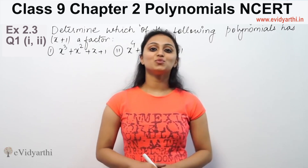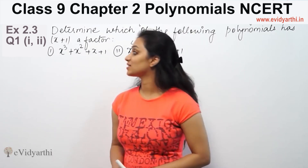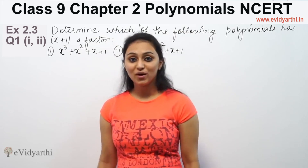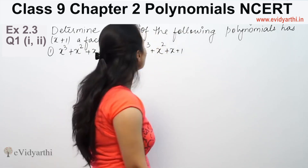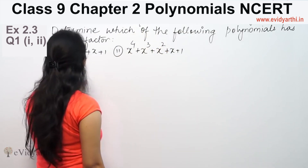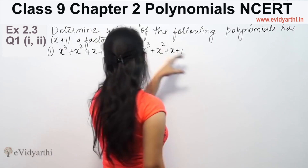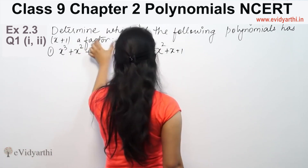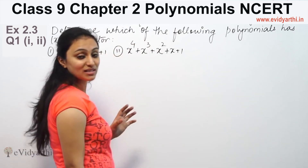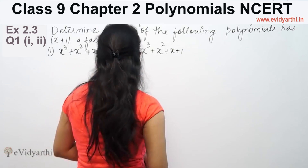Hi, this is Khushku with another question on polynomials. This is question number 1 from Exercise 2.4, page 43 from NCERT. The question says: determine which of the following polynomials has x plus 1 as a factor. A factor means that x plus 1 divides the polynomial exactly.